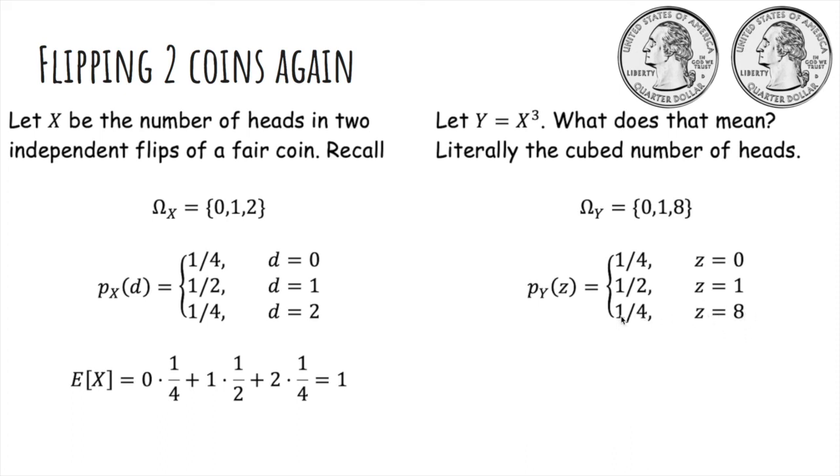And because you can only have 8 with probability 1 fourth, that's two heads. And then the expected value you can compute normally, and you get 2.5.